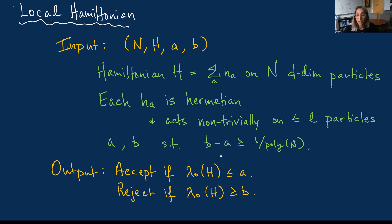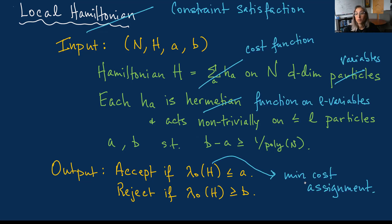You accept if the lowest eigenvalue is less than A, and reject if it's greater than B. If you're unfamiliar with the local Hamiltonian problem, you can think of it as a quantum version of constraint satisfaction. You're given a set of n variables each taking one of d values, an overall cost function that is a sum of terms, each a function on L variables, and you want to know whether the minimum cost assignment is less than A or greater than or equal to B. The local Hamiltonian problem has broad appeal to computer scientists as a natural quantum extension of a problem fundamental to computer science.